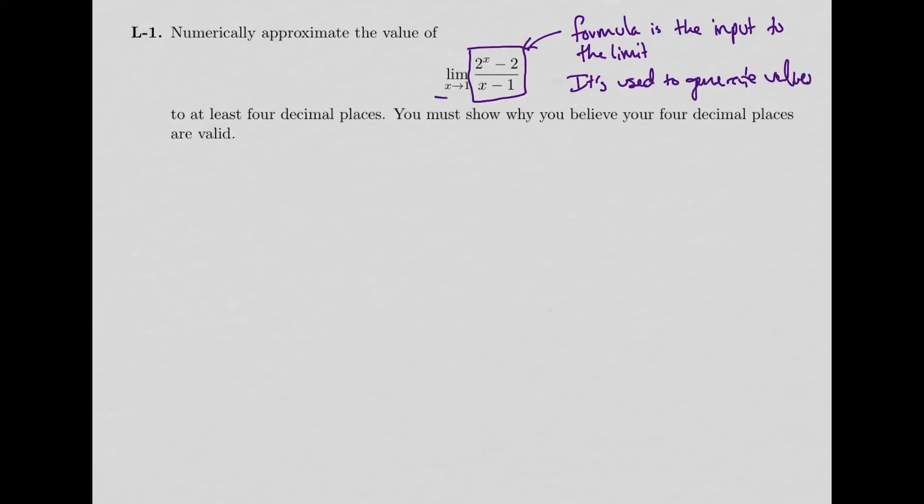Second thing is there's some information here about my x. My x is approaching one. So what this is telling me is I need to think about there's this table of values. I've got x values and I've got function values. And in this example, the function is this formula: 2 to the x minus 2 over x minus 1.